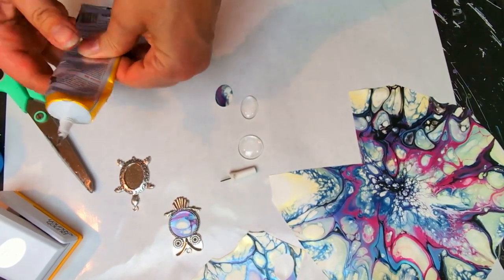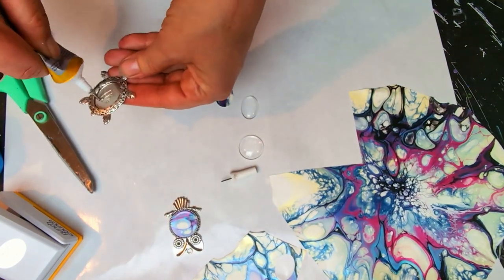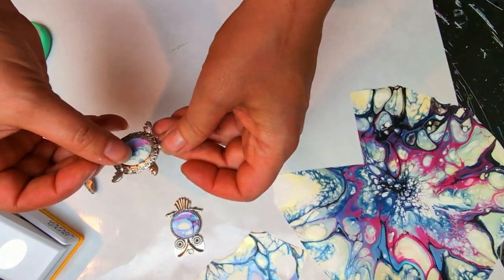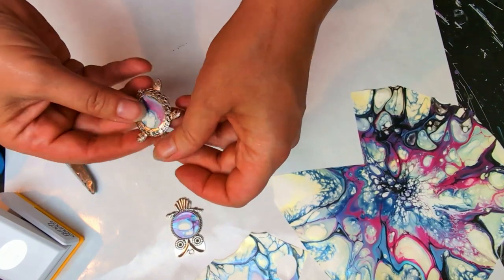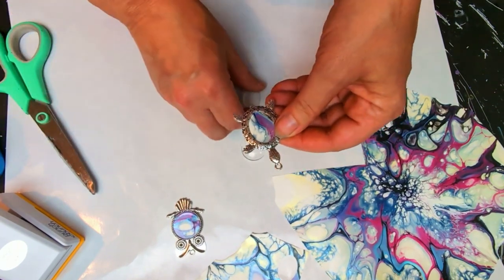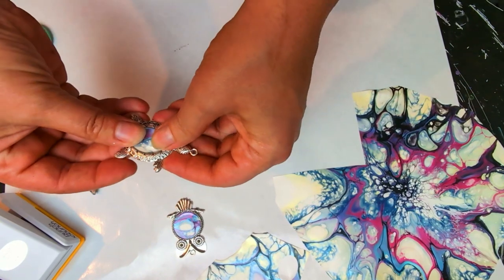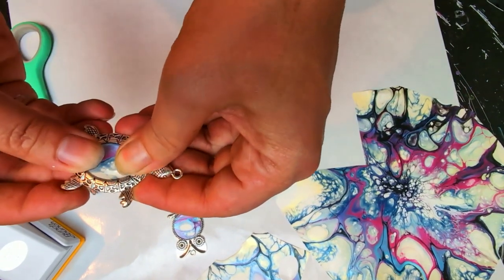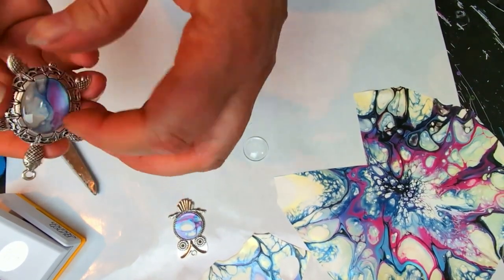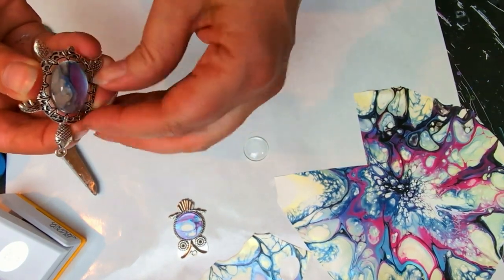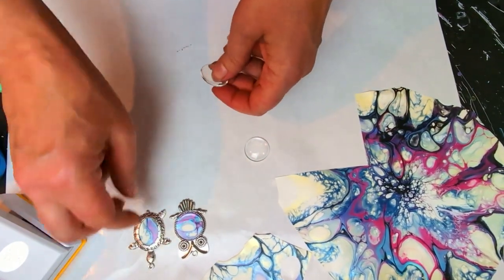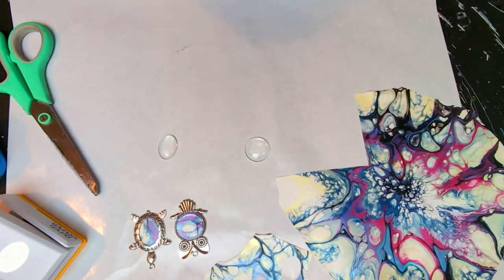And now we will do the same with the turtle. Now this one you can't really turn around, but still do the same thing, put that in there, you can move it just a teeny bit, there's a little bit of play in there, but just give it a nice press to get that glue spread out underneath there. And let that dry, 15 to 20 minutes.